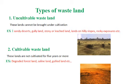First, let us see the types of wasteland. There are two types: uncultivable wasteland and cultivable wasteland. Uncultivable wasteland refers to lands that cannot be brought under cultivation. Examples include deserts, gullied land, stony or rocky land, lands on hilly slopes, and rocky exposures.